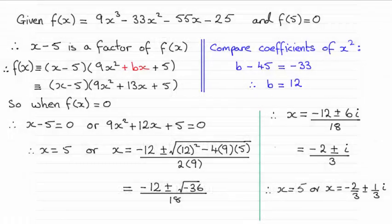Hi there. For this question, we were given f(x) equal to this cubic expression and told that when f(x) equals 0, x equals 5 was the solution. We're asked to find all the solutions to f(x) equaling 0.